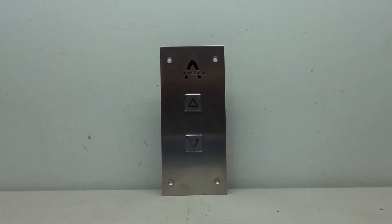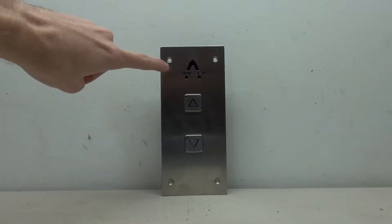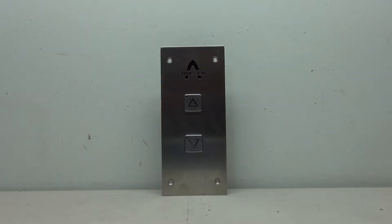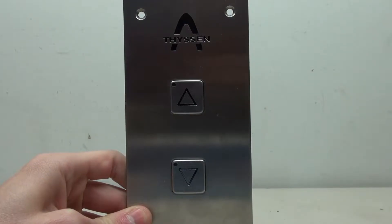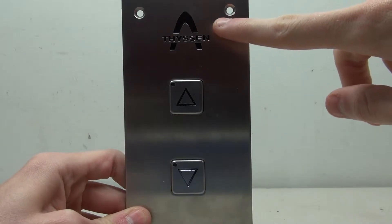Today we're taking a look at this Schaefer call station. Let's go ahead and get started. These buttons are Schaefer and they're from a Thyssen elevator. You can see here it says Thyssen, there's no Krupp in there, it's just Thyssen. Looking at the front of the panel, there's the Thyssen logo at the top and then there's just the two buttons.